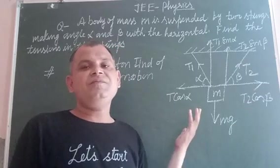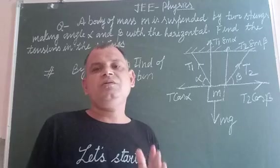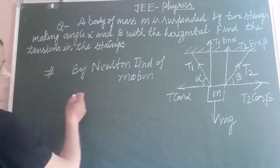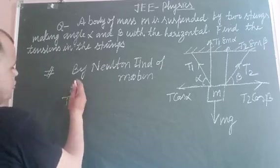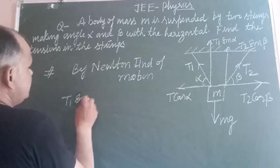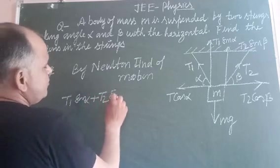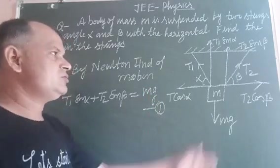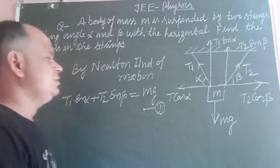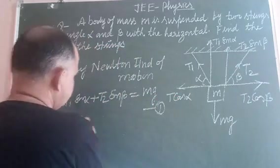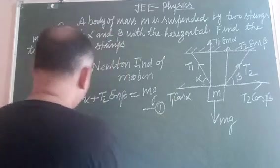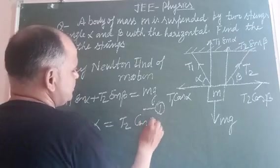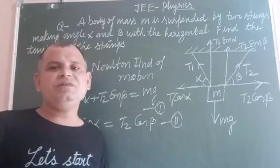For equilibrium, left side direction and right side direction forces are equal. We have that T1 sin alpha plus T2 sin beta equal to Mg. This is our first equation because upper side forces are equal to the lower side force. Now T1 cos alpha equal to T2 cos beta.